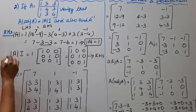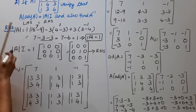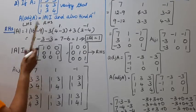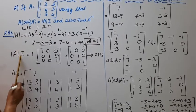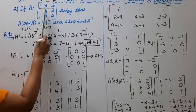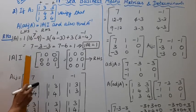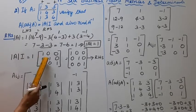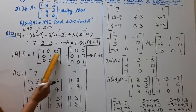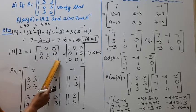Now for the right hand side, determinant A into I. Since determinant A is 1, the right hand side is 1 times I, which is the 3 by 3 identity matrix: [1,0,0; 0,1,0; 0,0,1].